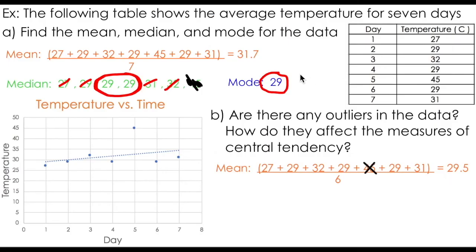Removing the data value of 45 degrees does not affect the mode either. Therefore, we can say the only measure of central tendency that is affected by the outlier is the mean.